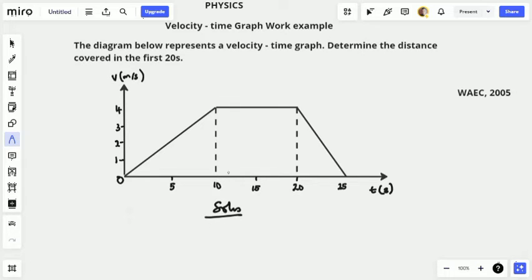Now we have to find the total distance covered in the first 20 seconds, that's the distance covered from zero to 20 seconds of the motion. And as usual, we know that the distance covered is always equal to the area under the graph.